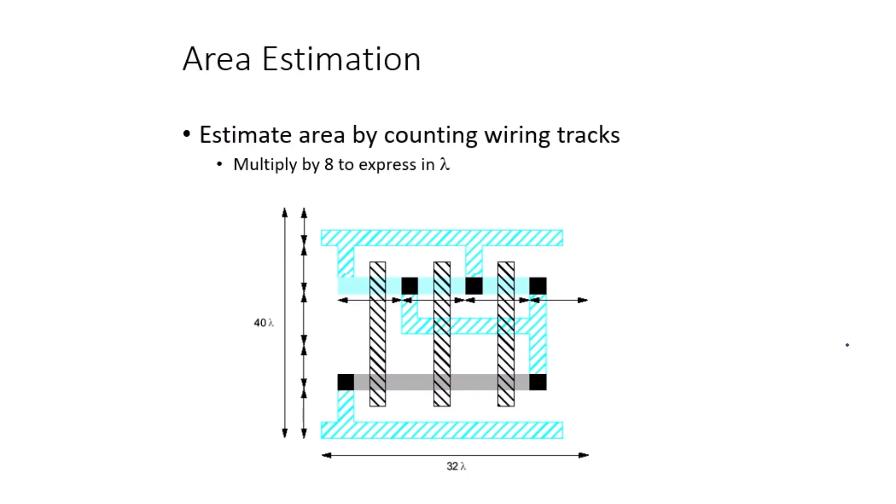Estimating the area early on helps you optimize the layout for space efficiency, which is critical for high-density designs. To further illustrate how this works, here is the layout of a three-input NAND gate. Notice how the diffusion layers are arranged in horizontal strips and gates are in the vertical positions. The metal layers are used to connect VDD and ground.